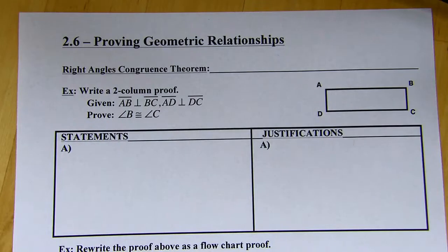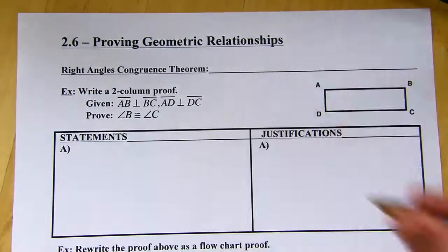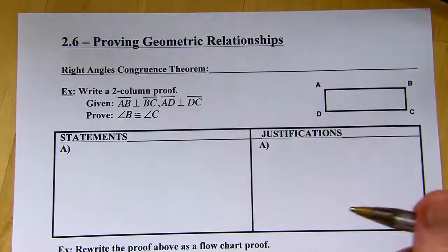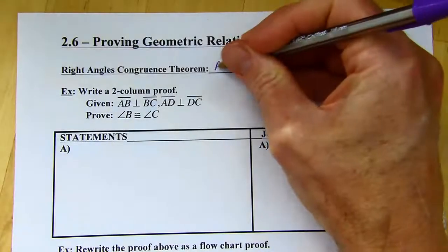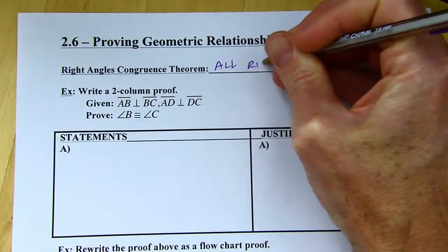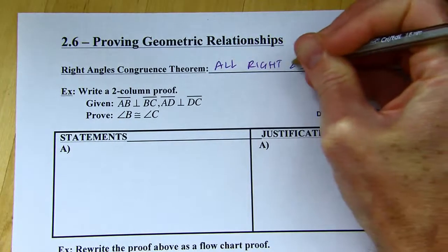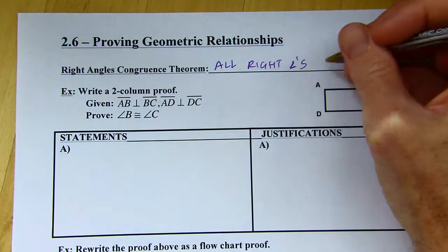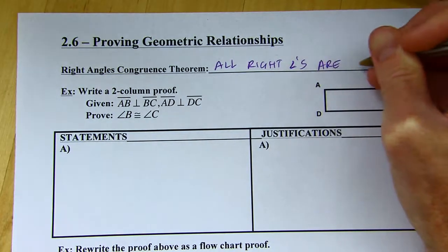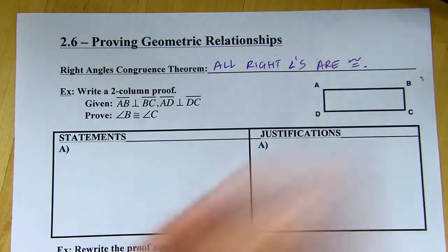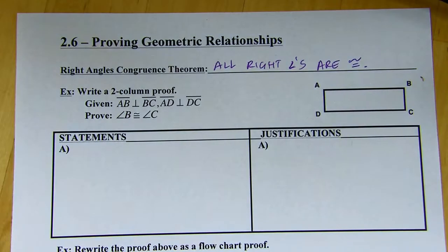Section 2.6, Proving Geometric Relationships. First up, the Right Angles Congruence Theorem. It says all right angles are congruent. They're all 90 degrees, and they all have the same measure, so they're all congruent. That might sound kind of obvious, but now we have a theorem that says it.